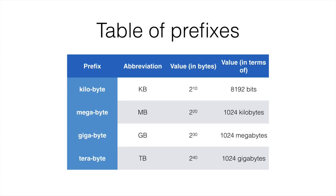This is kind of what I wanted you to get from this slide, is to see how it is 1024 of the previous one that makes each of the prefixes or values. So a kilobyte is 1024 bytes. A megabyte is 1024 kilobytes. A gigabyte is 1024 megabytes. And a terabyte is 1024 gigabytes.